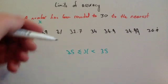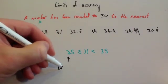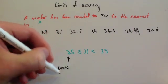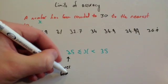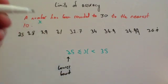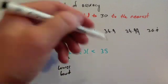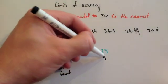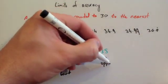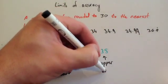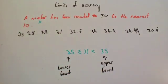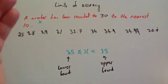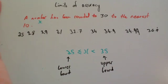The 25 is called the lower bound, because it's the lowest boundary for values that would round to 30 to the nearest 10. And 35 would be the upper bound. It can't be 35 itself, but anything below 35 would round down, so it's the upper boundary.